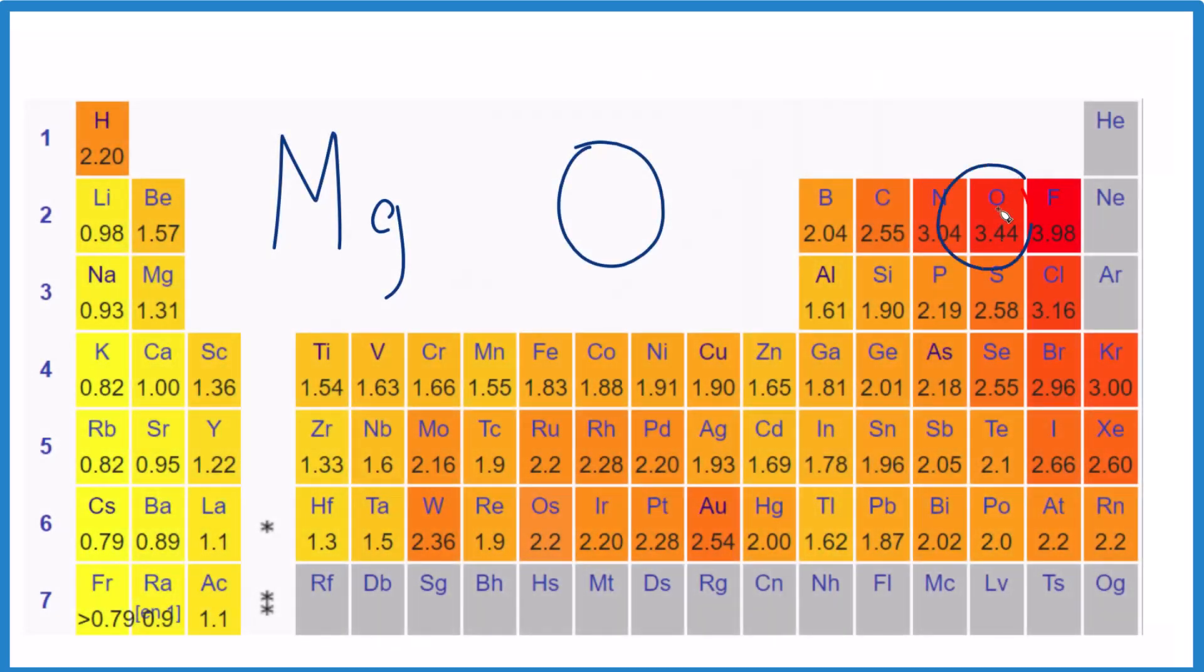If you subtract, so if you have 3.44 minus 1.31, you get 2.13. And since that's over 2, or sometimes people say 1.75,